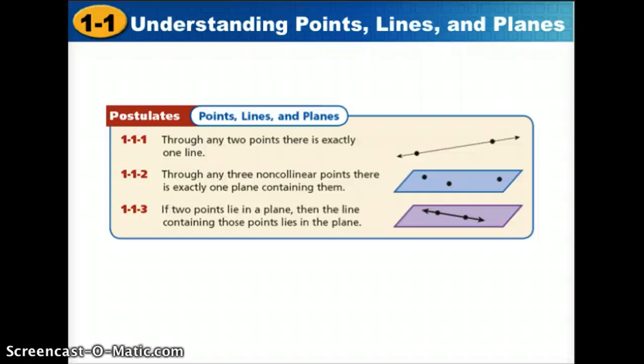Anytime you see two points, there will be exactly one line passing through them, never more than one. Anytime you see three points that are not on the same line, there is exactly one plane containing all three. If you have two points that lie in a plane, then the line containing those points also lies in that plane.